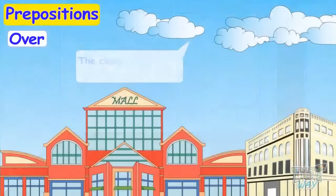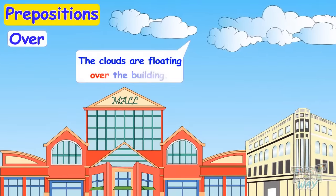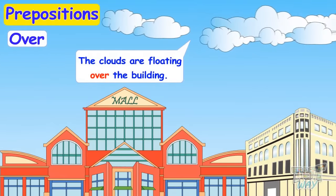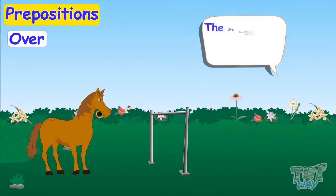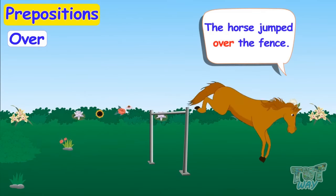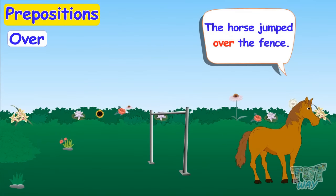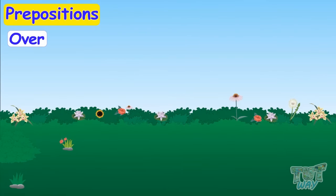The clouds are floating over the building. The horse jumped over the fence. So we learned where to use 'over'. Now it's time for our next preposition, which is 'between'.